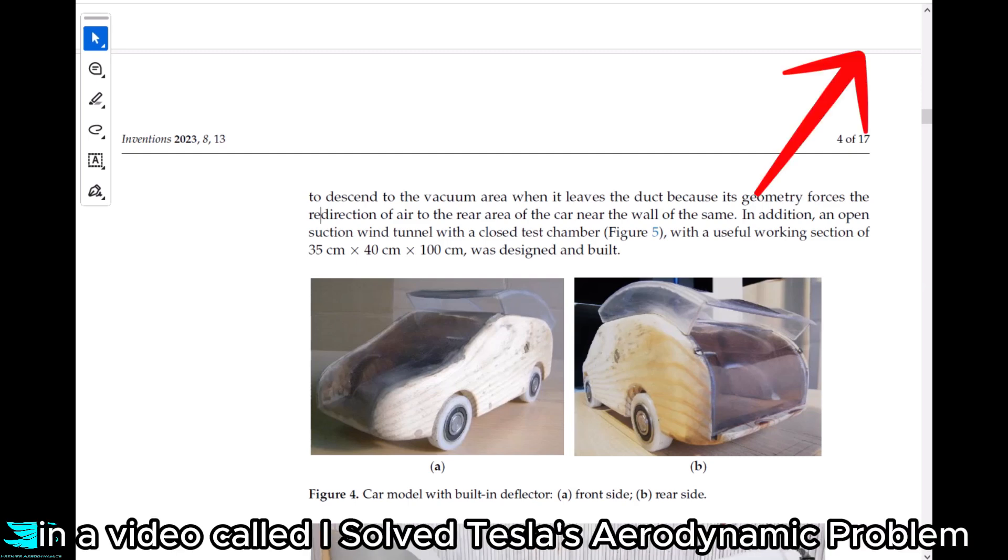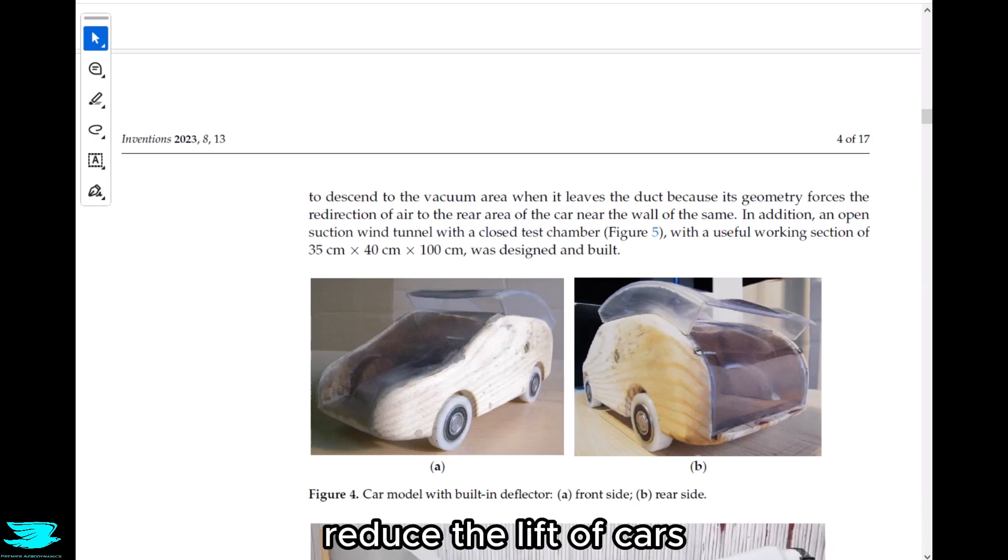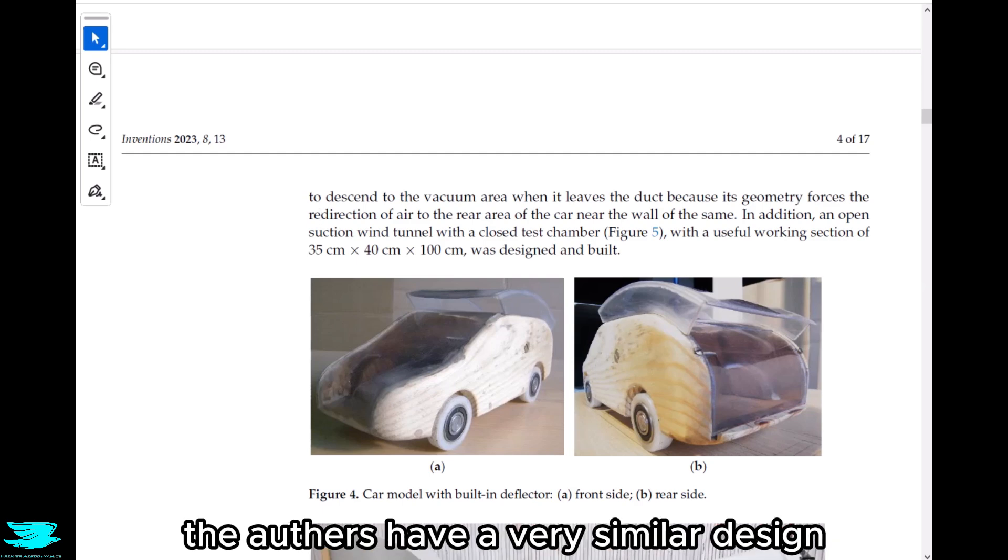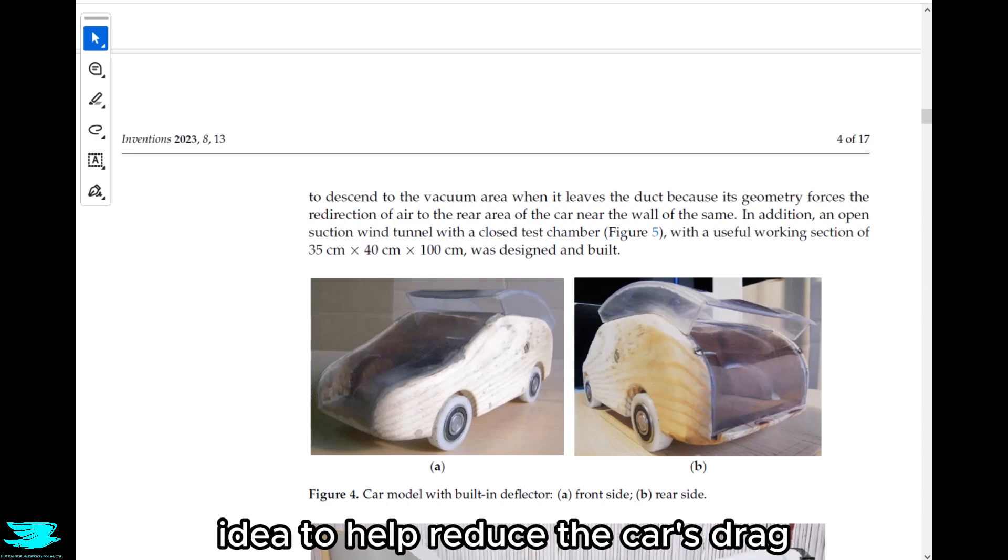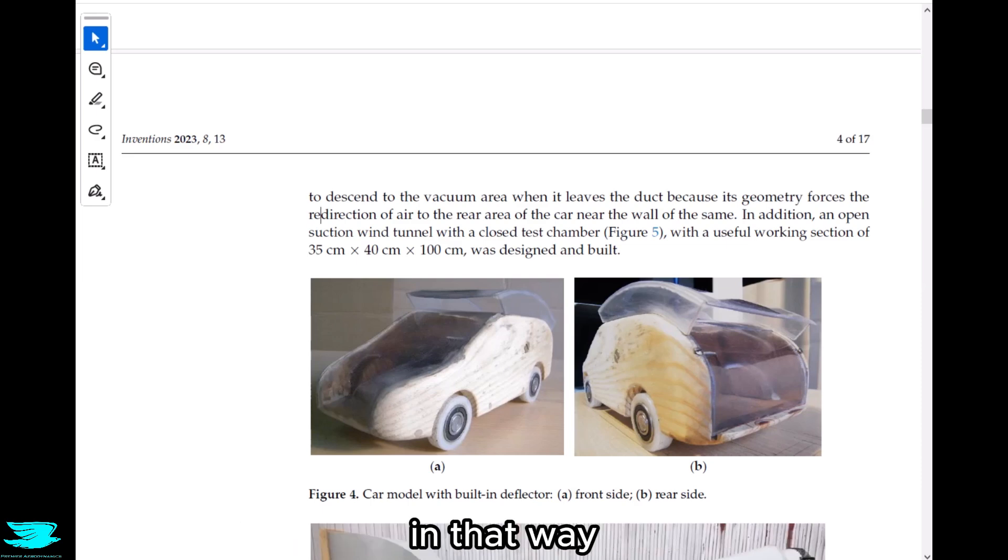This general design is similar to what I came up with in a video called I Solved Tesla's Aerodynamic Problem. In that video I looked at how putting a plate over the roof helped reduce the lift of the cars. It wasn't sealed to the sides though. Here the authors have a very similar design, but they came up with this idea to help reduce the car's drag, not the lift.